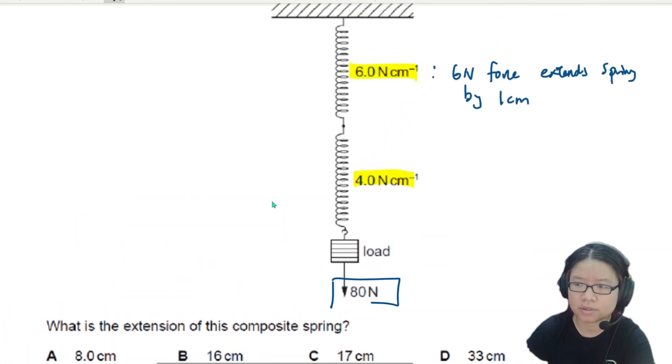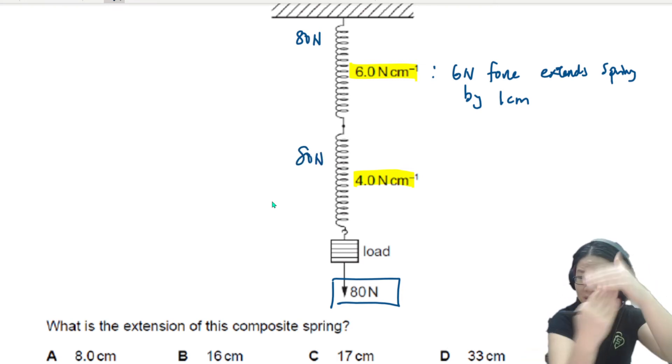Well, this 80 N is not shared. This first spring has to support 80 N. This second spring also has to support 80 N because one after the other.